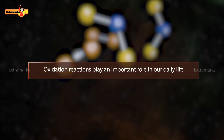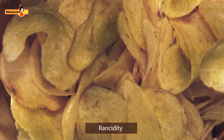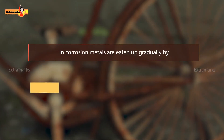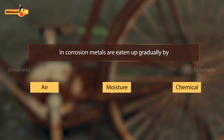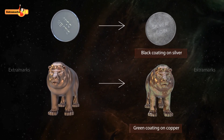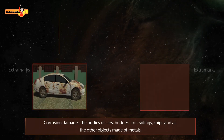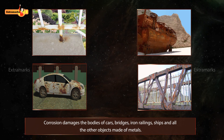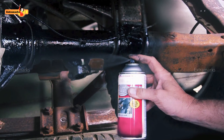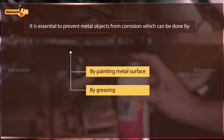Oxidation reactions play an important role in our daily life. Corrosion of iron and the rancidity of food are common examples of this category. Corrosion is the process in which metals are eaten up gradually by the action of air, moisture, or chemicals on their surface. Rusting of iron is an example of corrosion. The black coating on silver and the green coating on copper are other examples. Corrosion damages the bodies of cars, bridges, iron railings, ships, and all other objects made of metals. Since corrosion is a destructive process, it is essential to prevent metal objects from corrosion. It can be done by painting the metal surface, by greasing, or by galvanization.